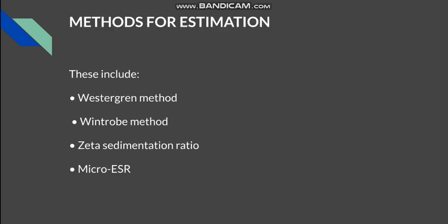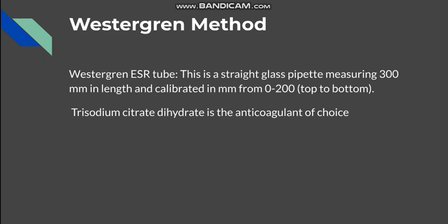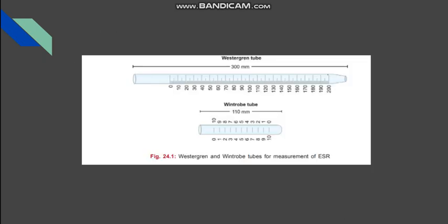Going to the methods of estimation. There are many methods: zeta sedimentation ratio, which is an automatic method; Westergren's method; Wintrobe's method; and micro-ESR. We will discuss Westergren's method in detail. The Westergren's method involves a Westergren's pipette — a glass pipette open from both sides, 300 mm in length, with markings from 0 to 200 on the lower two-thirds of the pipette.